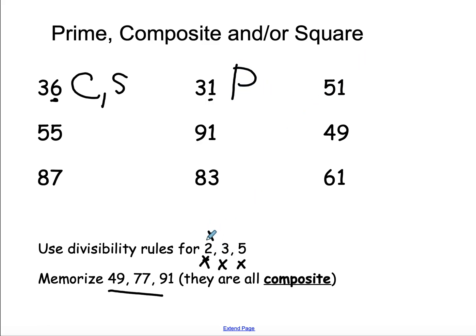51, not divisible by 2. It's not even. But 5 plus 1 is 6. That means it is divisible by 3. It's a composite number. I don't care 3 times what. I just need to know that there is another number.